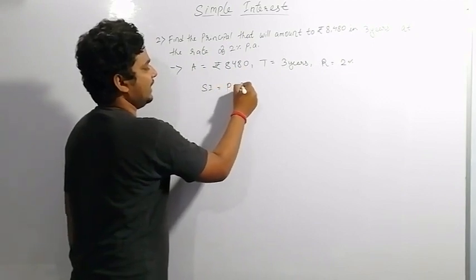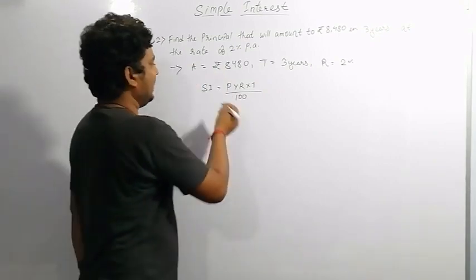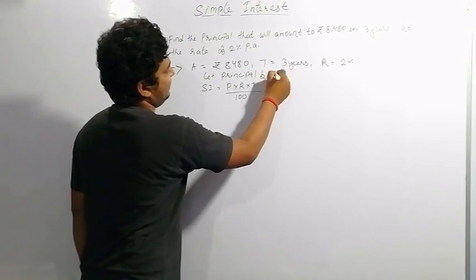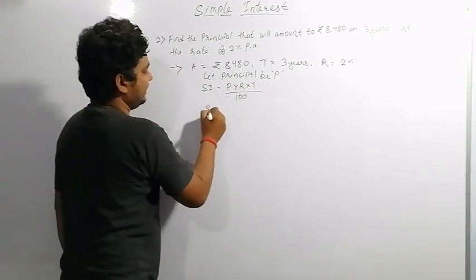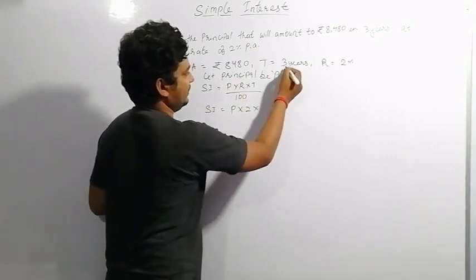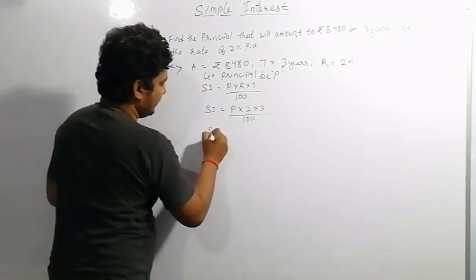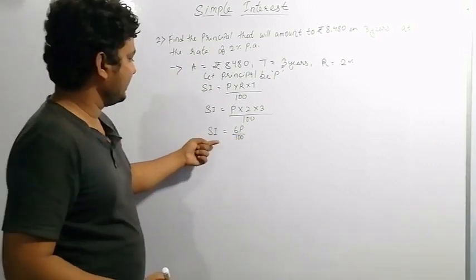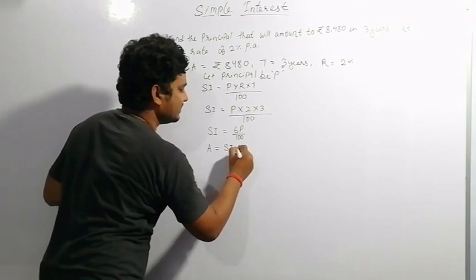SI equals principal into rate into time divided by 100. But P is not given, so we let principal be P. Substituting: SI equals P into 2 into 3 divided by 100, which gives SI equals 6P by 100. Now using the amount formula: amount equals simple interest plus principal.